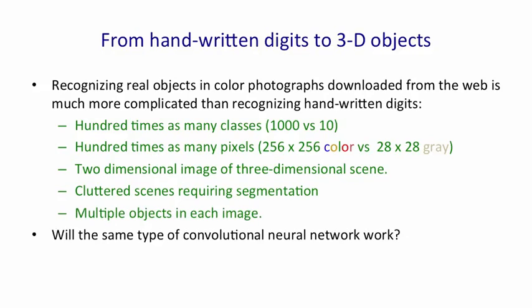So the question is: will the same kind of convolutional neural network that proved so good at recognizing handwritten digits work for real color images? In the domain of real color images, we probably do need to wire in some prior knowledge, because if we try to do it without any knowledge wired in — putting in all the knowledge by generating extra training examples — the computational problem is still too large for current computers.